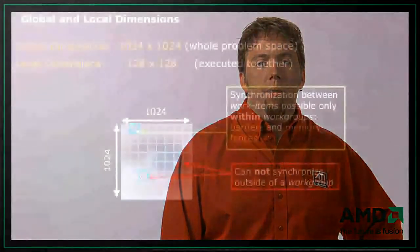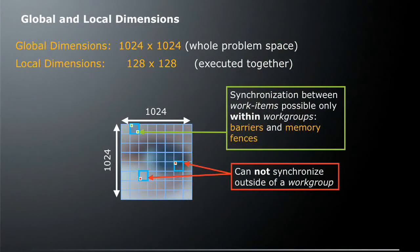Just a quick review. The global and local dimensions of a problem — let's say in this case we're going to process an image — so the global dimensions of this image would be 1024 by 1024, and that's the whole problem space because we're operating on a 1K by 1K image. We've decided that the best way to execute our problem is using workgroups of 128 by 128. Those are going to be executed together, and recall that these are workgroups, so as we're processing the image, each of these workgroups is going to be processed together on the same compute device.